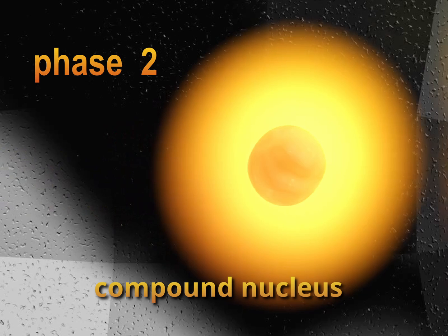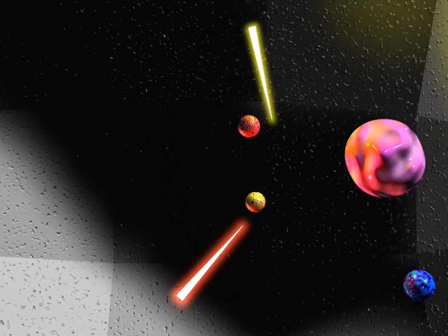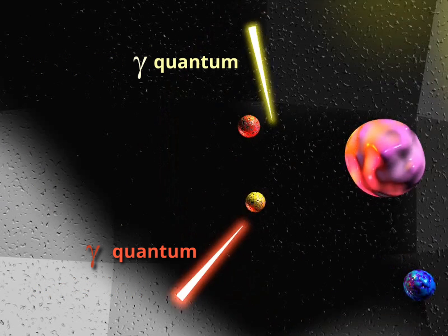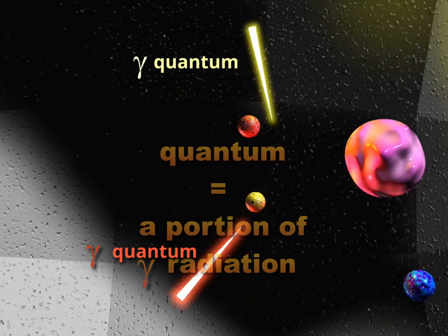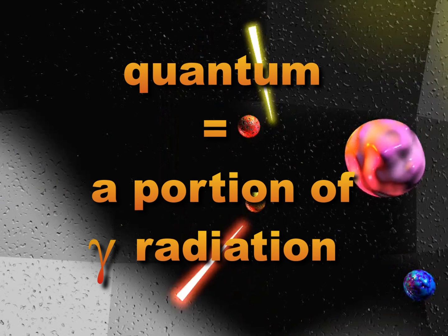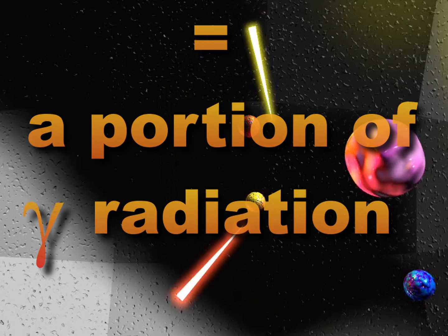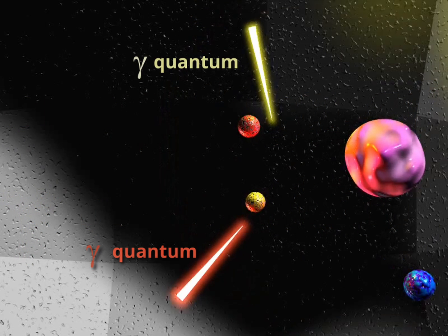The compound nucleus would like to reduce its excess of energy — figuratively, it would like to cool down. It can do this by emitting an alpha particle, a proton, or a neutron. It can also emit a gamma quantum. Quantum in Latin means a portion — a portion of invisible electromagnetic radiation similar to X-rays. Gamma quanta can have different energies, here marked by using different colors for each quantum.